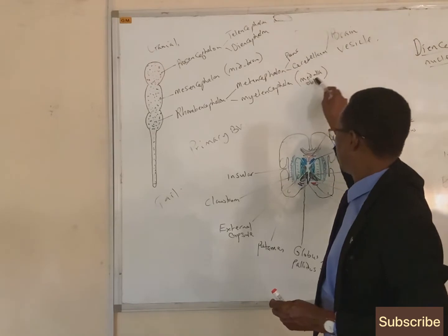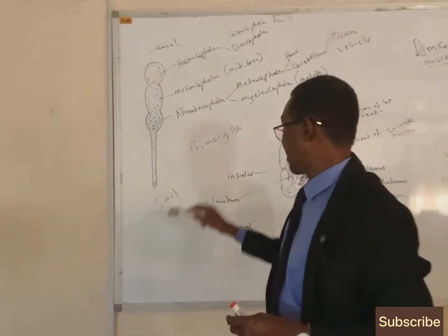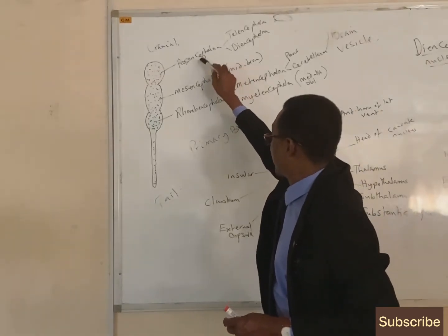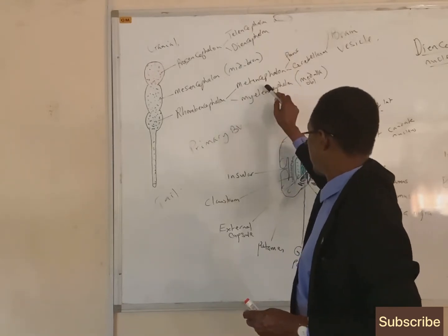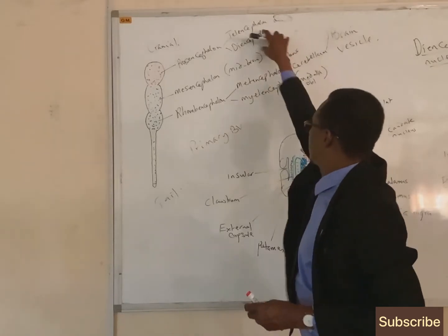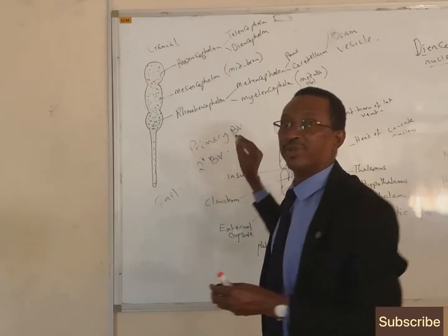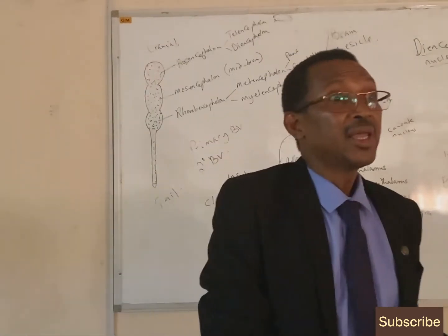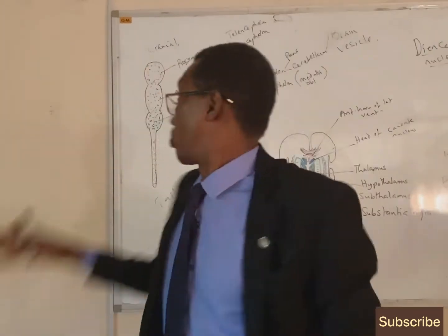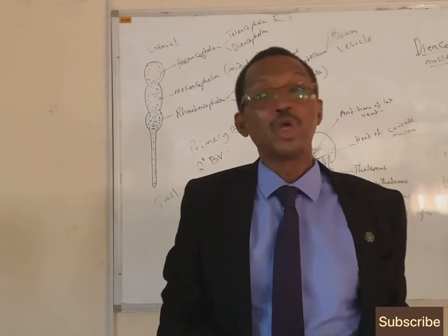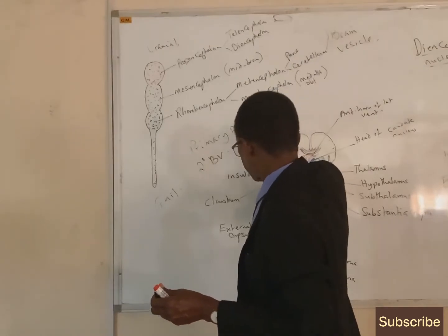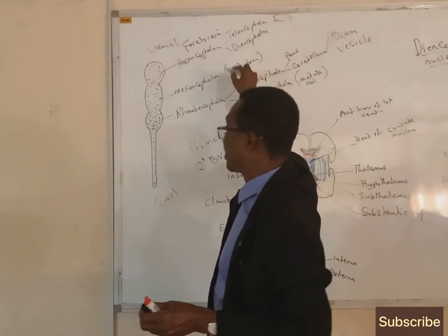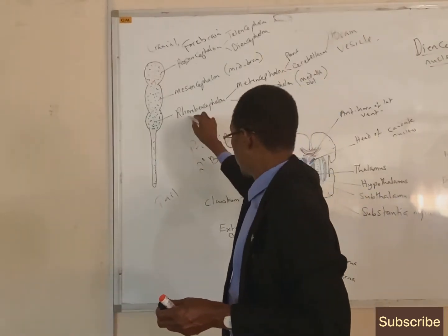The pons and cerebellum develop from the rhombencephalon — our small brain develops from here. The myelencephalon gave rise to the medulla oblongata. These three are called primary brain vesicles. The divisions of prosencephalon into telencephalon and diencephalon, and rhombencephalon into metencephalon and myelencephalon, are called secondary brain vesicles. To summarize: the prosencephalon is the forebrain, the mesencephalon is the midbrain, and the rhombencephalon is the hindbrain.